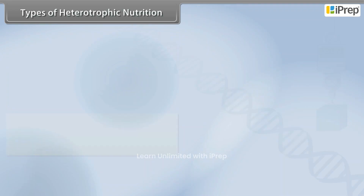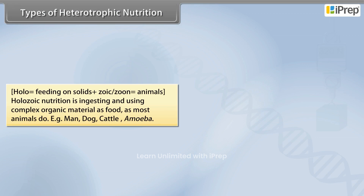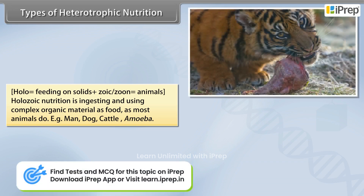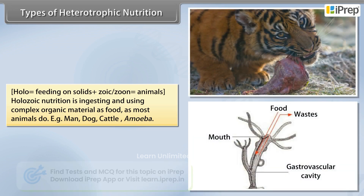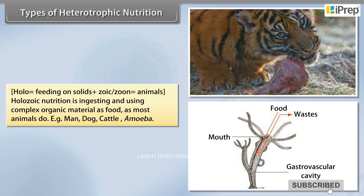'Holo' means feeding on solids and 'zoic' comes from 'zoon' meaning animals. Holozoic nutrition is ingesting and using complex organic material as food, as most animals do. Examples include man, dog, cattle, and amoeba.